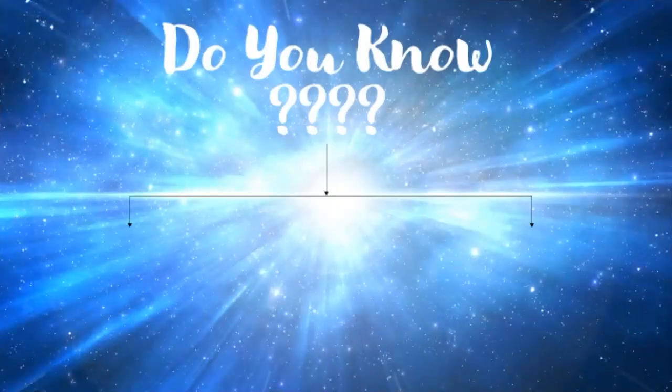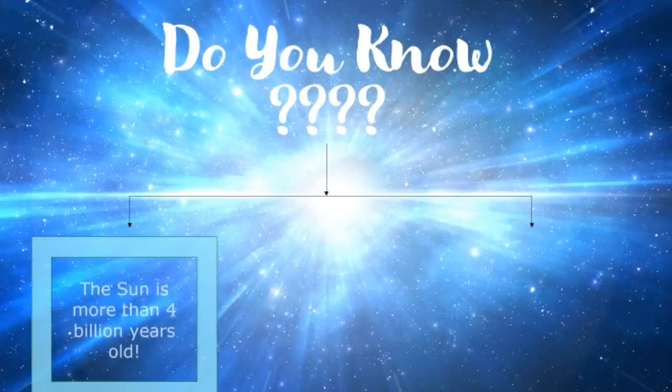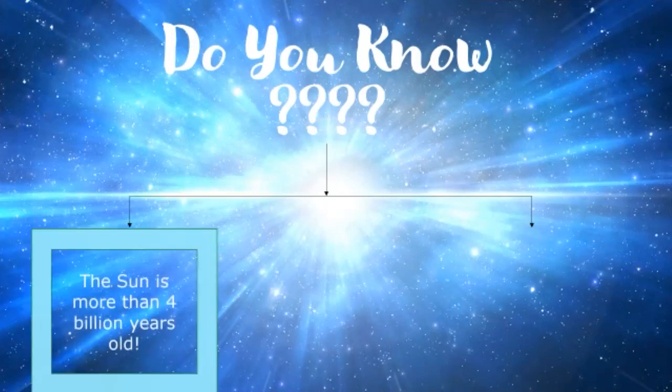Now I am going to share some fun facts with you. Do you know the sun is more than 4 billion years old? Do you know how many zeros are there in a billion? There are 9 zeros. So the sun is more than 4 billion years old.